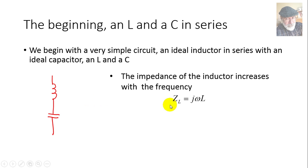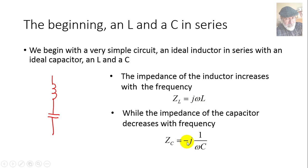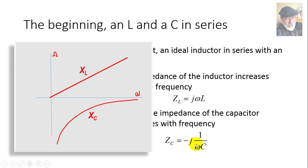The impedance of the inductor, jωL, grows with frequency, while the impedance of the capacitor, -j1/ωC, decreases with frequency. The reactance of the inductor, ωL, and the reactance of the capacitor, -1/ωC, can be plotted against frequency like so.